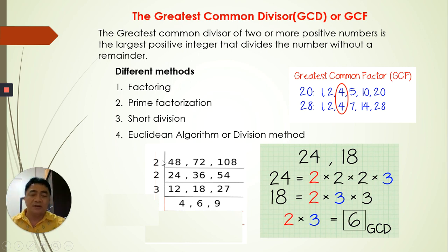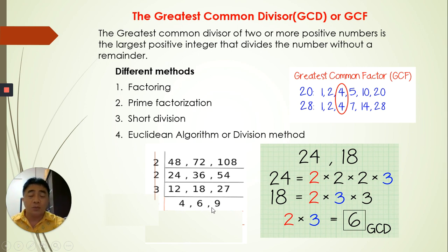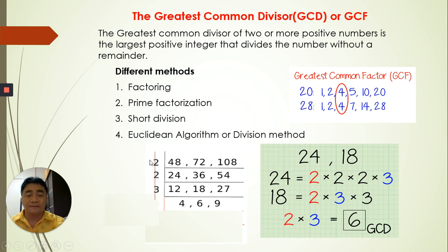For 48, 72, and 108 using short division: divide by 2, then again by 2, then by 2 again. We stop at that point because 27 is an odd number, so we try another prime number, which is 3. That gives us 4, 6, 9. We stop because no other prime can divide all three numbers. We multiply the divisors: 2 times 2 is 4, times 3 is 12. Therefore, the GCD for these numbers is 12.